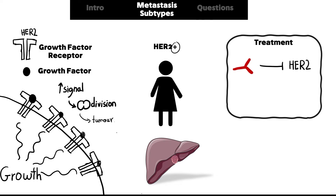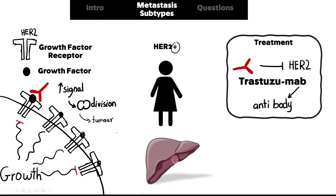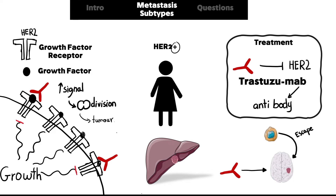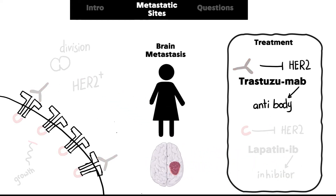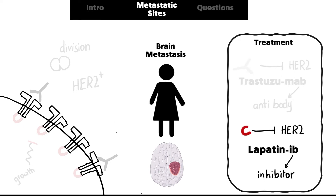The current treatment for HER2 positive cells is the antibody trastuzumab — its name ends with 'mab,' an abbreviation for monoclonal antibody. It blocks the growth factor receptor interaction and blocks the flow of growth signals. However, some HER2 positive cancer cells can escape this treatment to the brain, because these antibodies cannot pass through the blood-brain barrier.